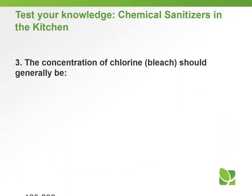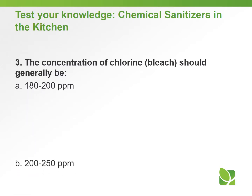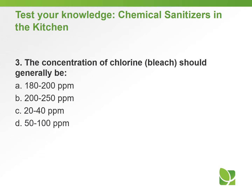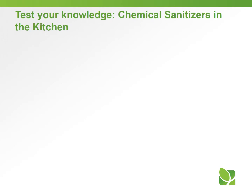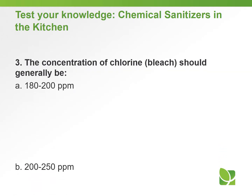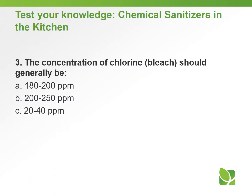Question number three: the concentration of chlorine or bleach should generally be — A. 180 to 200 parts per million, B. 200 to 250 parts per million, C. 20 to 40 parts per million, or D. 50 to 100 parts per million. The answer to question number three: D, 50 to 100 parts per million.